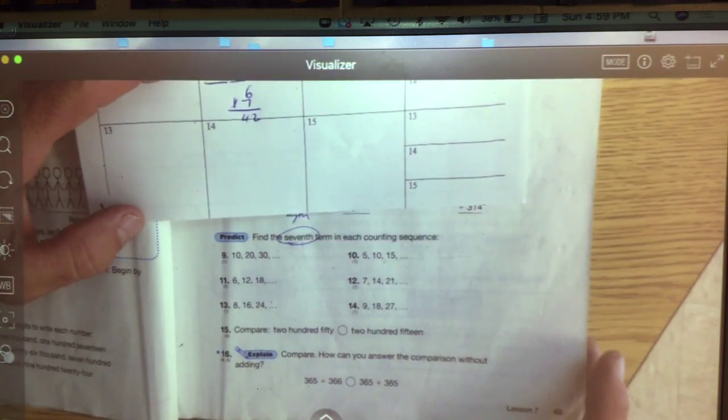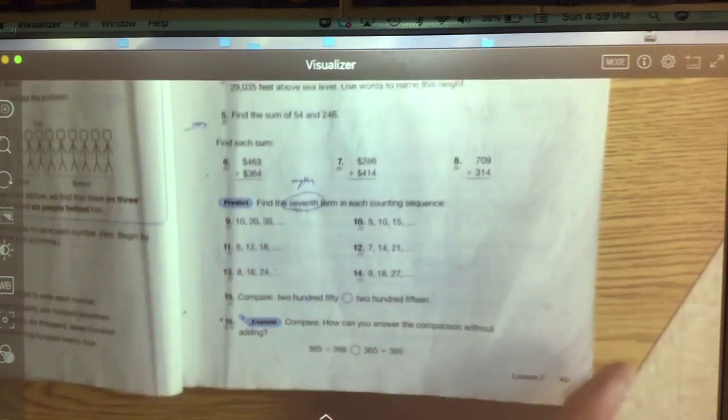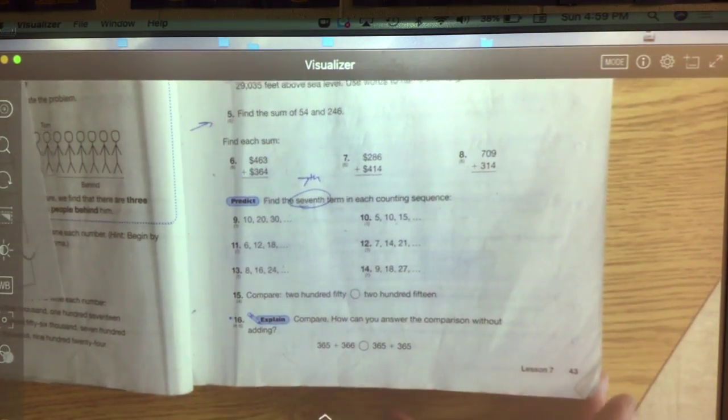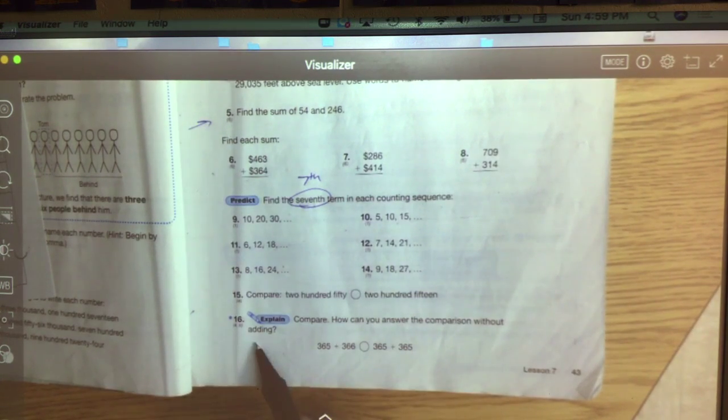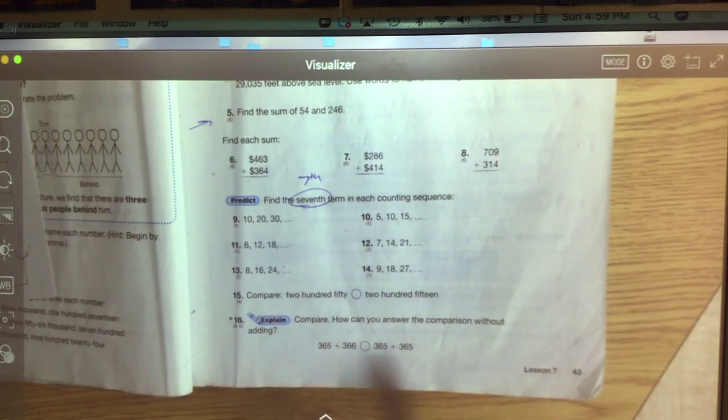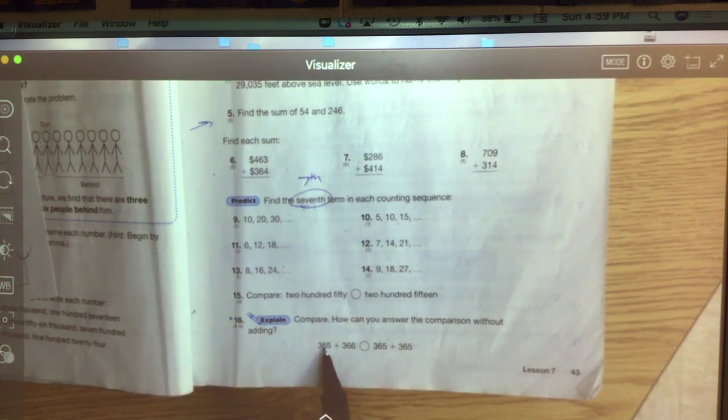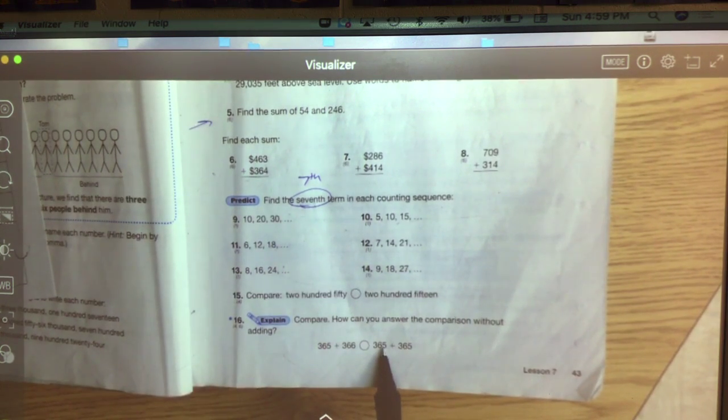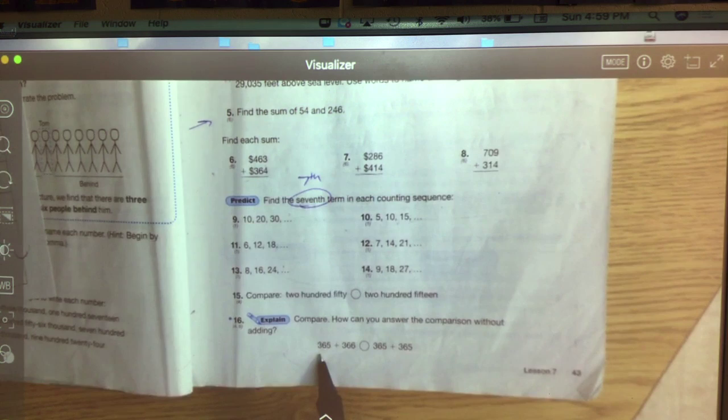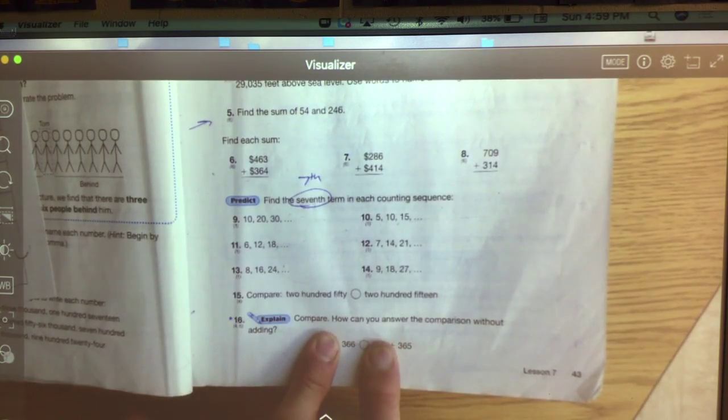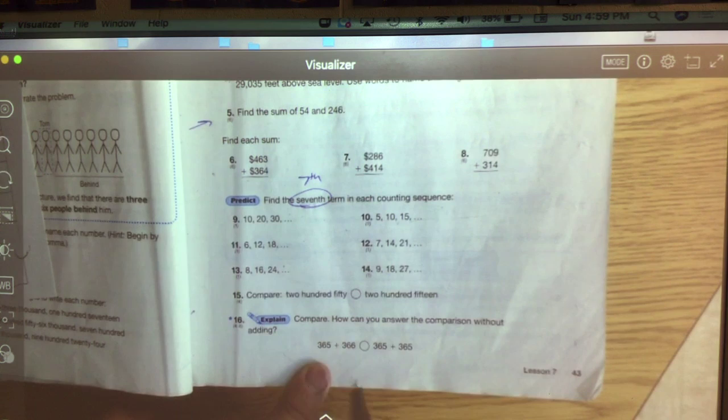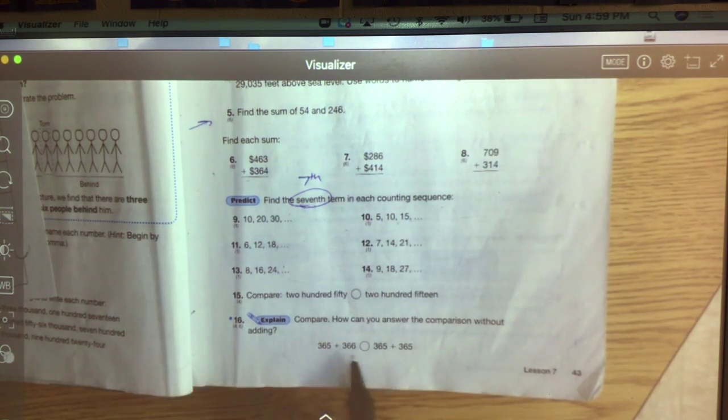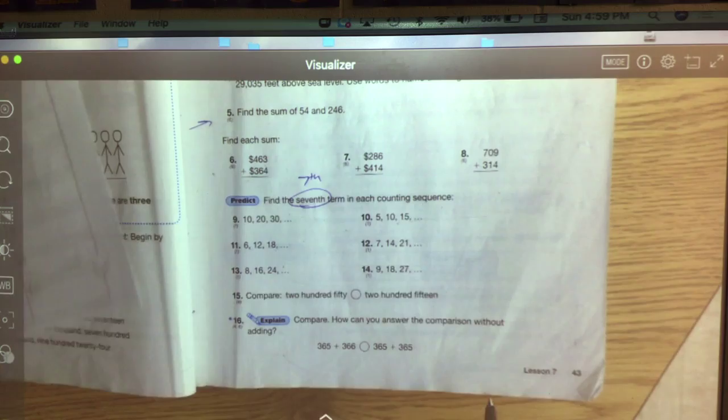Let's take a look at number 16. 16 down here at the bottom of the page says compare. How can you answer the comparison without adding? What do you mean, how can I do this without adding? Well, if you look real carefully, this one says 365 and this one says 365. So if I had a balance and you were on one side with a 365-pound weight, and I was on this side with a 365-pound weight, it would be equal. So if we got rid of those two numbers, what do we really have left?